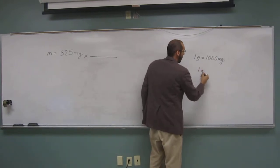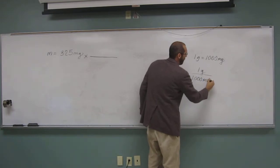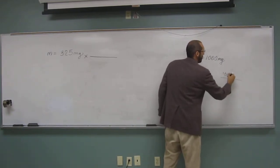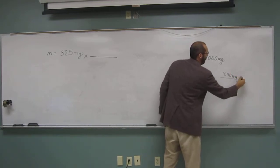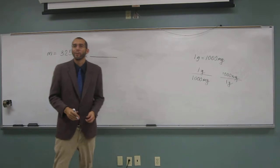One gram divided by 1,000 milligrams. Or the other one would be 1,000 milligrams over 1 gram. That's milligram, a shortened version.